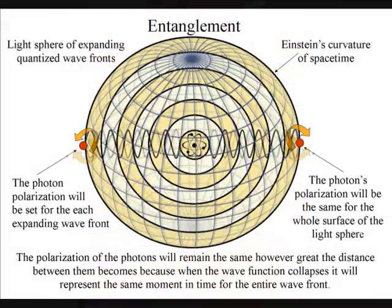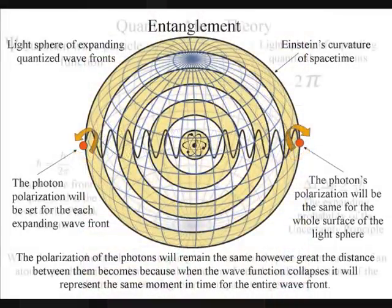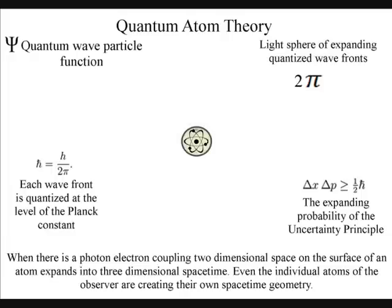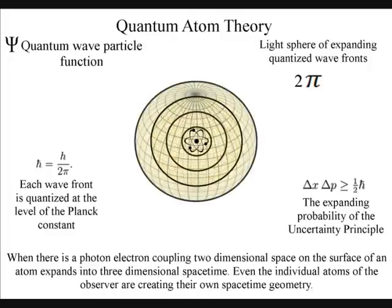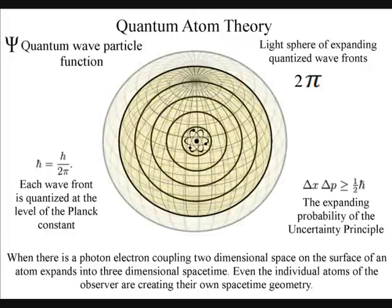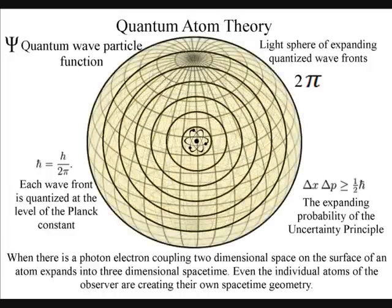We have entanglement because the polarization will be set at the creation of each expanding wave-front. The wave-front will expand in the form of a light sphere, and the polarization will remain the same for the entire surface of the light sphere, no matter how large it becomes.